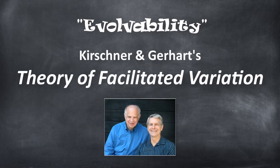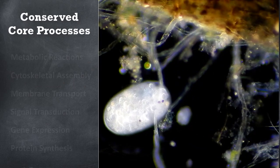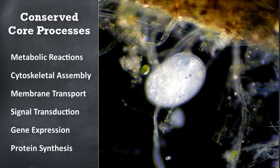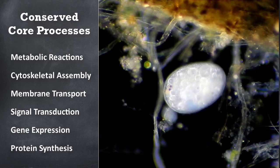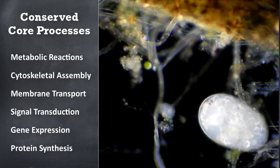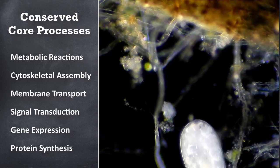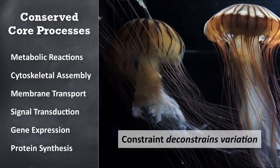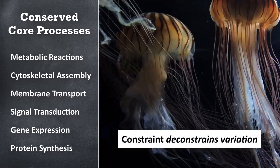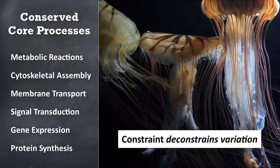Kirchner and Gerhardt's theory of facilitated variation offers an explanation. Early life evolved a set of conserved core processes which are highly constrained and utilized by all subsequent forms of life. Indeed, mutations in these core processes would now be lethal, but the processes are also modular. As such, their high level of constraint actually deconstrains the range of variation that can arise from their selective and integrated use.